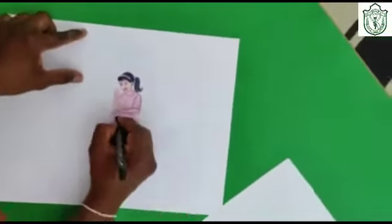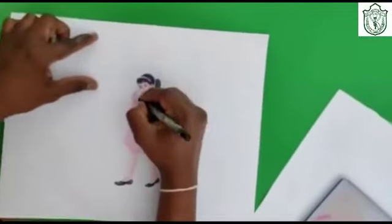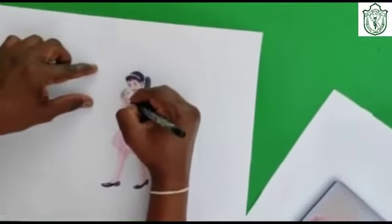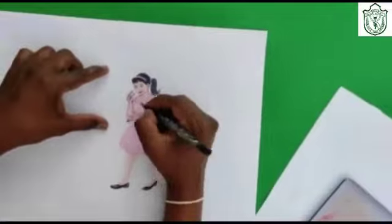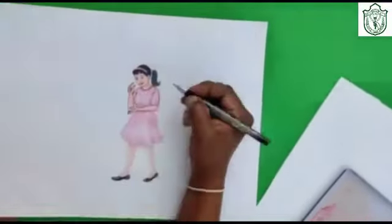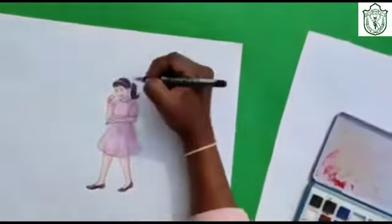After completing my coloring work, I will use black gel paint to make outline on each part of the body and show details of the picture.